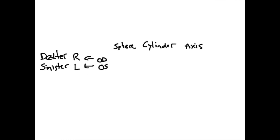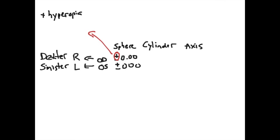First I'm going to talk about the sphere. The sphere is going to have a standard notation of either a plus or a minus, and then some digits following it. The plus or minus refers to the type of prescription: if you see a plus in front of the number, it stands for hyperopia or farsightedness. If you see a minus, it stands for myopia or nearsightedness.